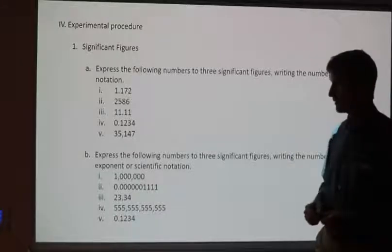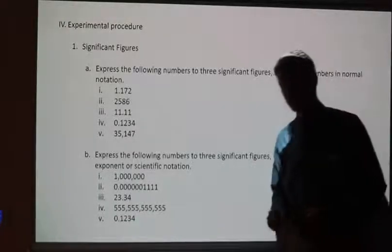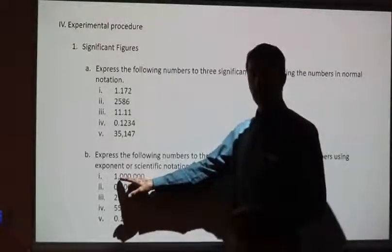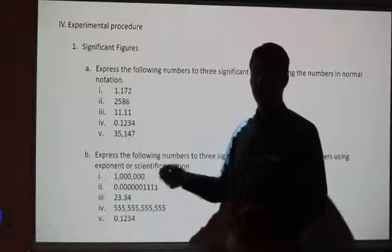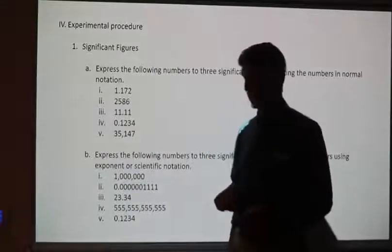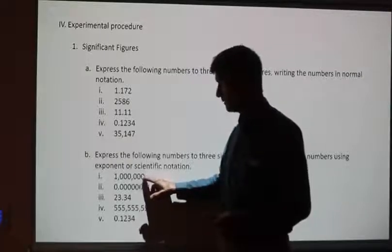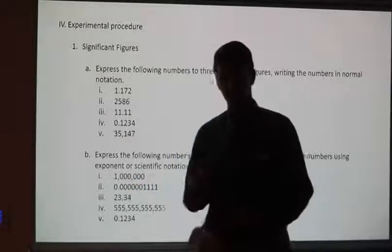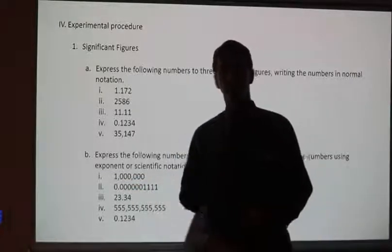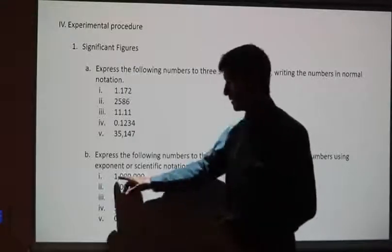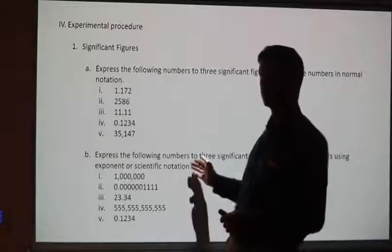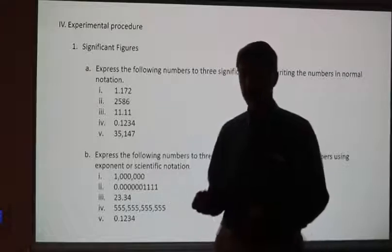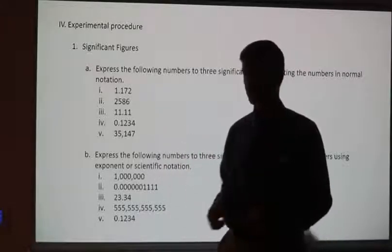In Part A, you're going to keep everything in decimal form. In Part B, you change it to scientific notation. You want the number in three significant figures, but you're going to move the decimal point around and then multiply by a power of 10. Here I move the decimal place 1, 2, 3, 4, 5, 6 until my number is between 1 and less than 10, giving me 1.00 — three significant figures — times 10 to the 6th power.